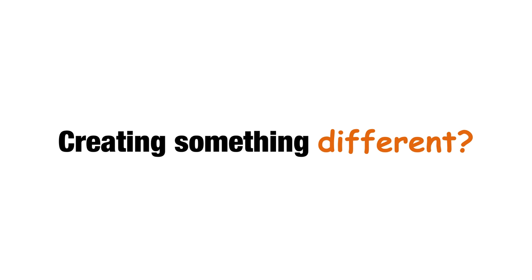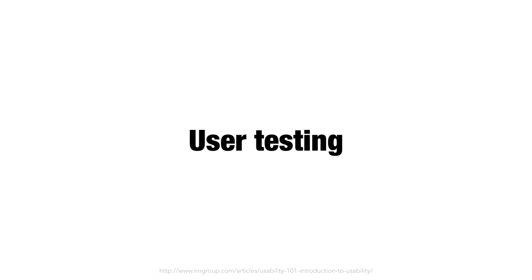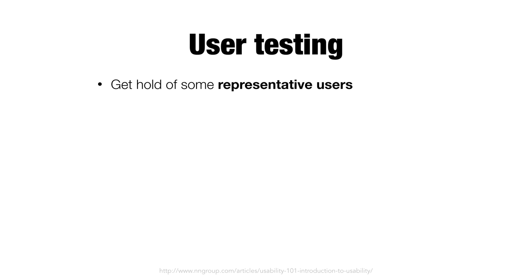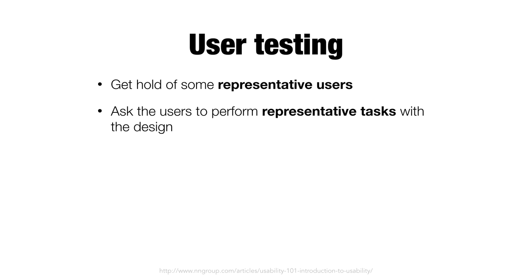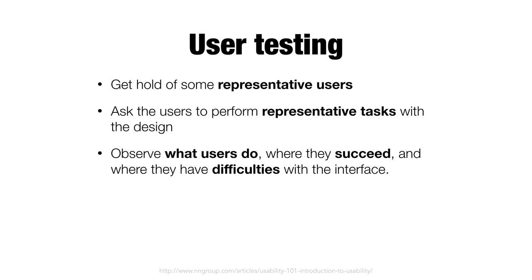If you're creating something different from the defaults, just make sure you do user testing before you release — this is incredibly important. Get representative users — not just your mum, your dad, or your best friend, unless they are your representative users, because they'll either be too harsh or too nice. You want real feedback from actual representative users. Get them to do representative tasks and observe where they succeed and where they have difficulties. The most important thing is to just let the users do the talking rather than jumping in to explain things.